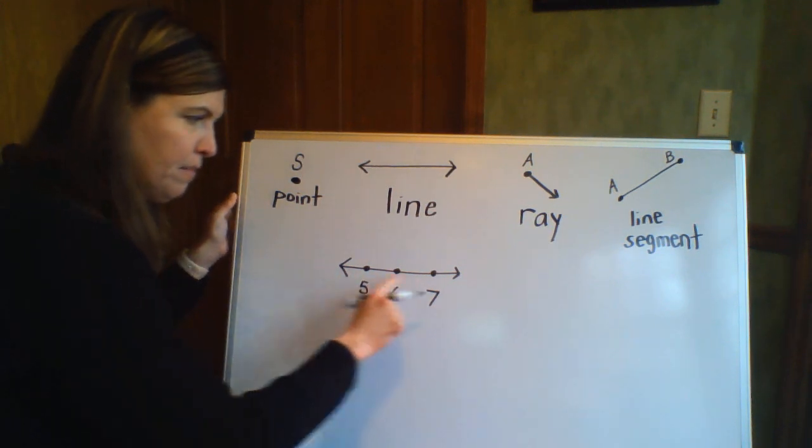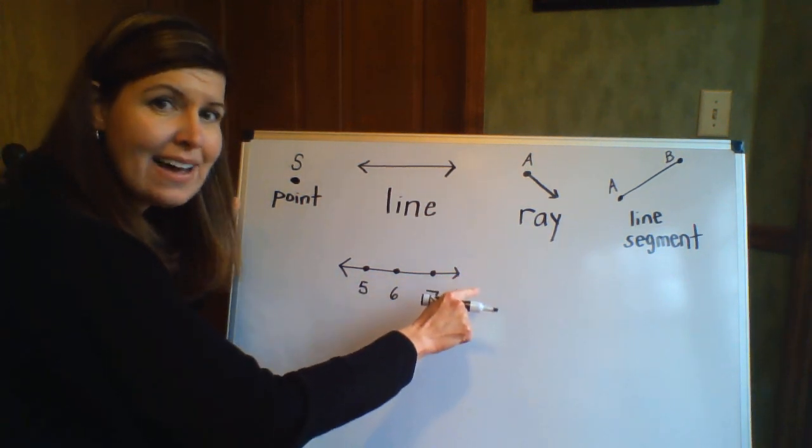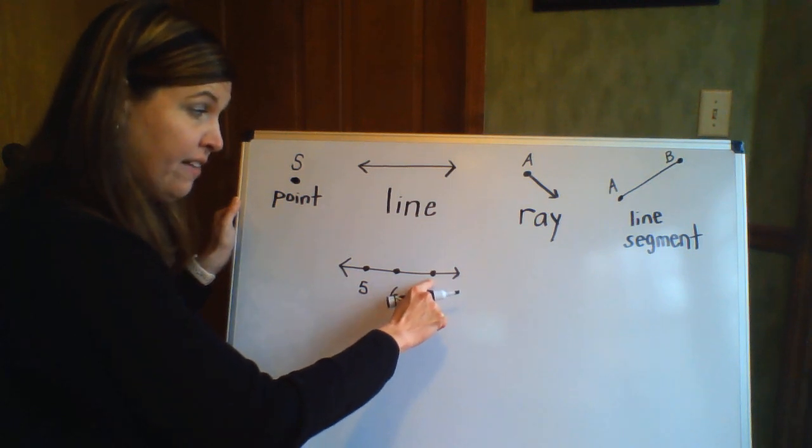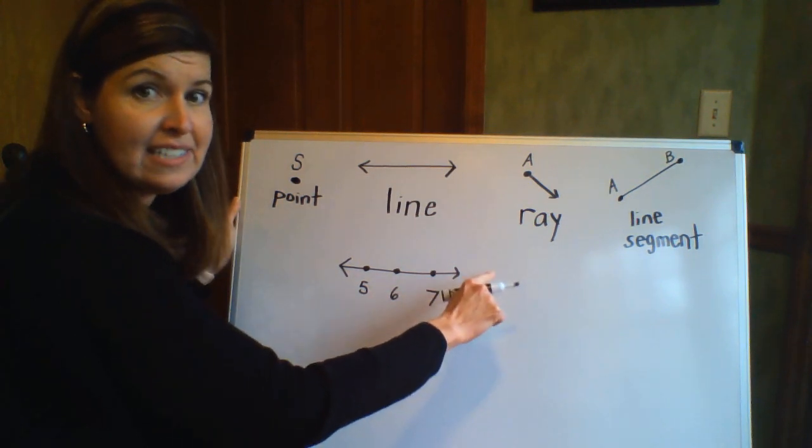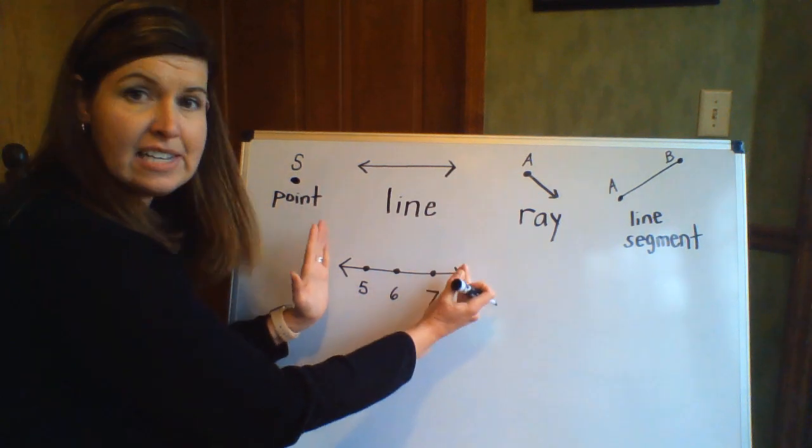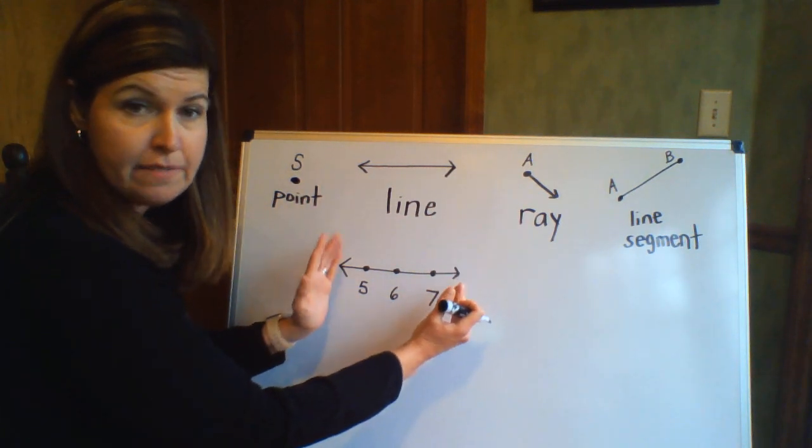And there's also numbers on this other side. So from seven it continues on eight, nine, ten, but it's only showing this part of the line.